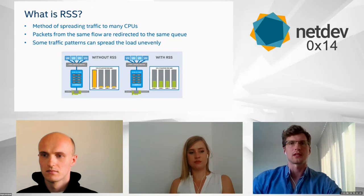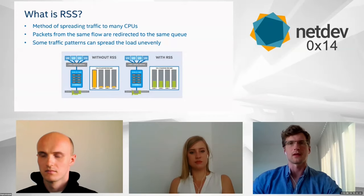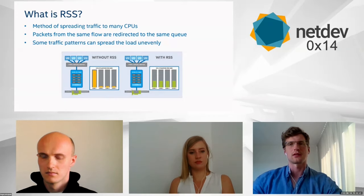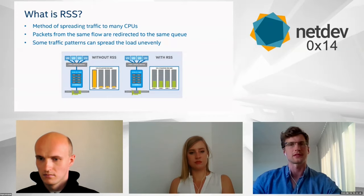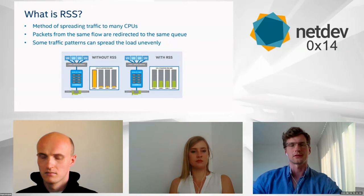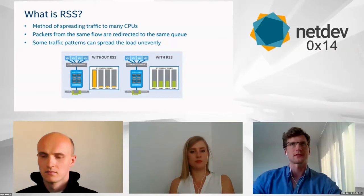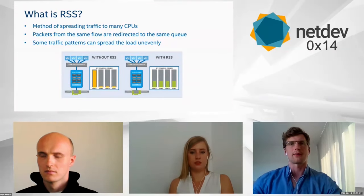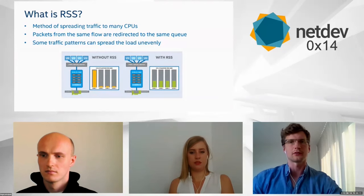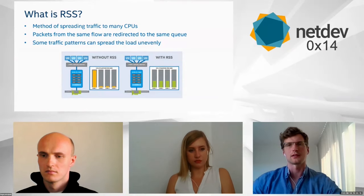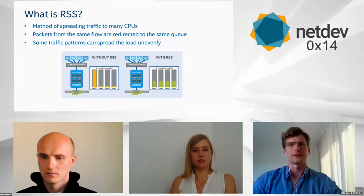RSS, while spreading and balancing packets between CPUs, does not break in-order processing by itself. The way packets are processed in the network card maintains ordering even as RSS distributes them, so no reordering is introduced. RSS is not meant to direct packets to a specific CPU; it is limited to spreading packets and balancing load across CPUs in the system.